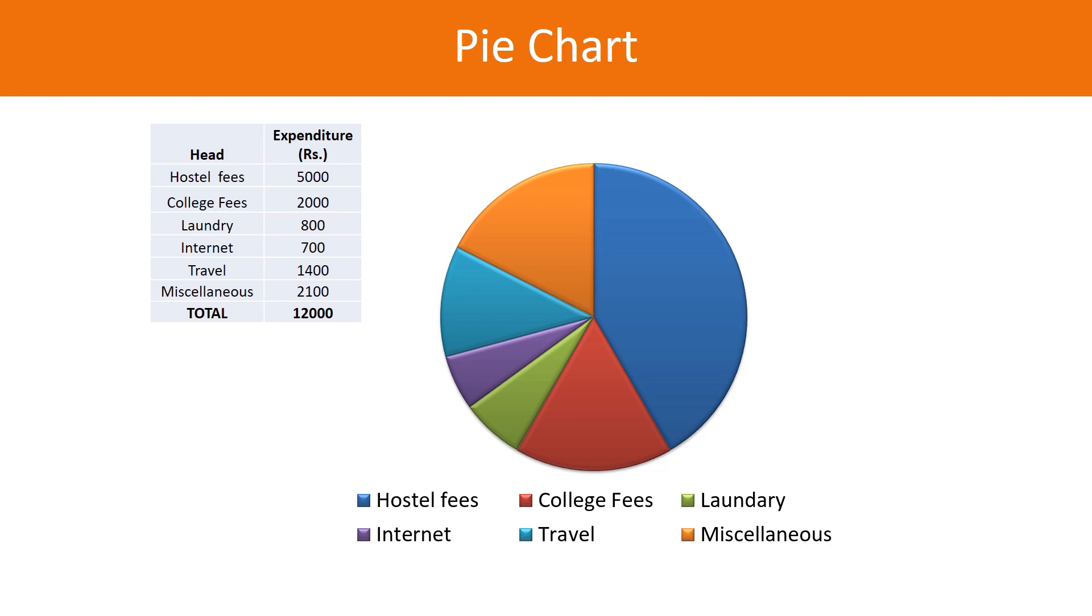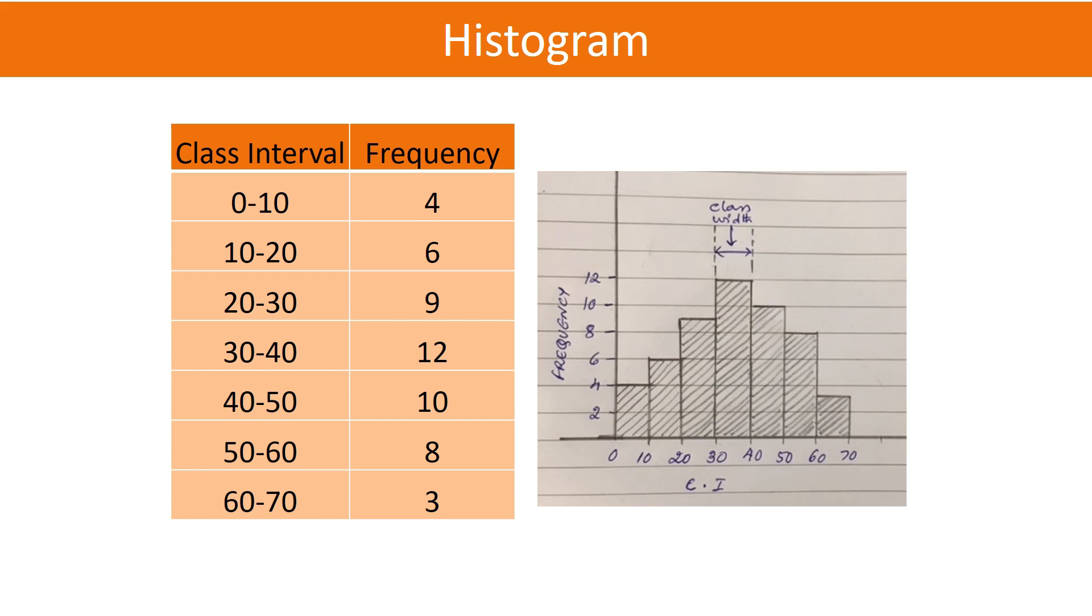Another way to represent data is using a histogram. A histogram looks similar to a bar diagram, but the main difference is that bar diagrams are one-dimensional (only length), whereas histograms are two-dimensional. In histograms, the width represents the class interval (0-10, 10-20, 20-30, etc.), and the frequency is represented as the length of the rectangle.